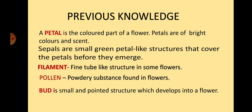Before starting today's class, let us revise what you have learnt in the previous class. In our last class you learnt about the parts of a flower. A petal is the coloured part of a flower. Petals are of bright colours and scent. Sepals are small green petal-like structures that cover the petals before they emerge. Filaments are fine tube-like structures found in some flowers like hibiscus. Pollen is the powdery substance found in flowers. Bud is a small and pointed structure which develops into a flower.